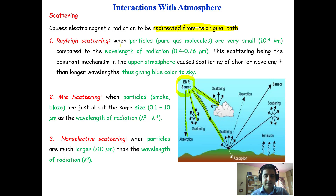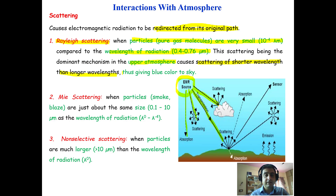The first type is Rayleigh scattering, which occurs when gas molecules and particles are very small — around 10 to the power of minus 4 lambda microns — compared to the wavelength of visible radiation (0.4 to 0.776 microns). This scattering is dominant in the upper atmosphere and causes shorter wavelengths to scatter more than longer wavelengths, which is what gives the sky its blue color.